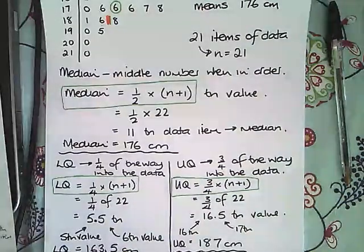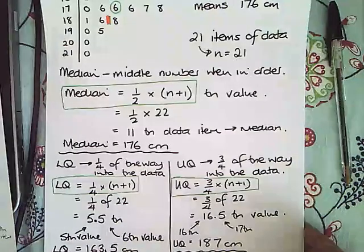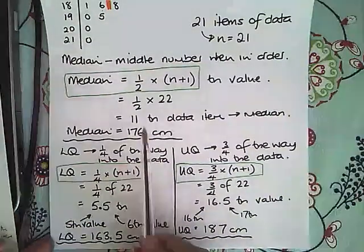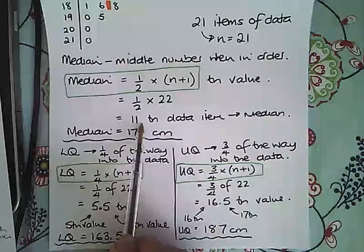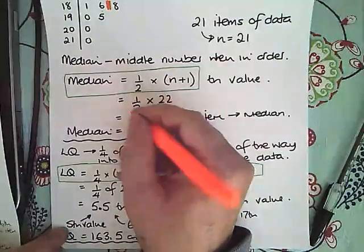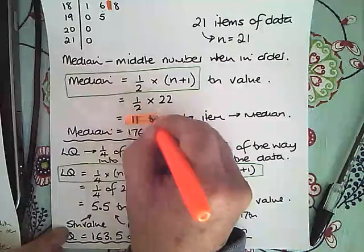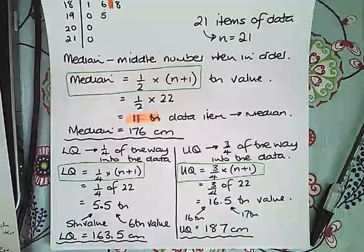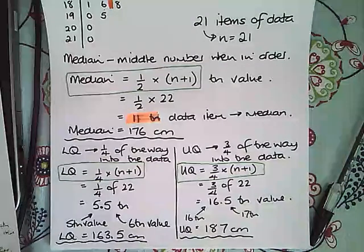And that gives you the position of the number in the stem and leaf diagram. So here the 11th value, and then you have to go and find the 11th value. It is not the number 11, so the median is not 11, it is the 11th value.